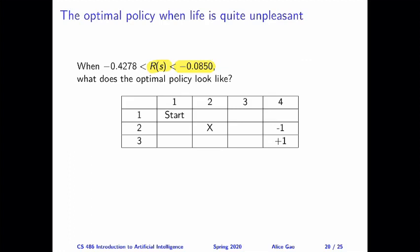So in this case, life is quite unpleasant, as described in the title. And the agent is willing to take the shortest route to the plus one state. And on the way of taking the shortest route, there might be a chance that the agent is going to fall into the minus one state by accident. And the agent is willing to take this risk.